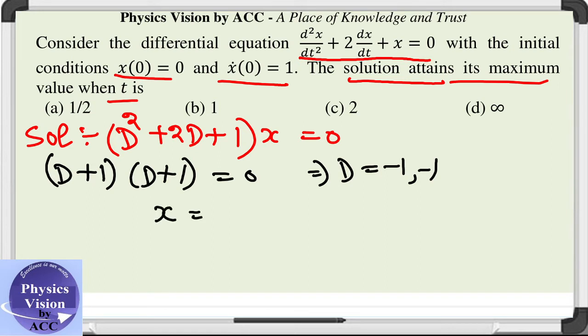So x becomes (c₁ + tc₂)e^(-t). This is our general solution.